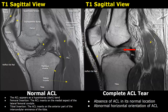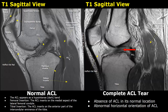This fibrous hypointense dark band is the ACL. It inserts on the medial aspect of the lateral femoral condyle. Its tibial insertion is on the anterior part of the intercondylar eminence of the tibia at the tibial plateau. We can also see part of the posterior cruciate ligament — the PCL — which is posterior to the ACL.